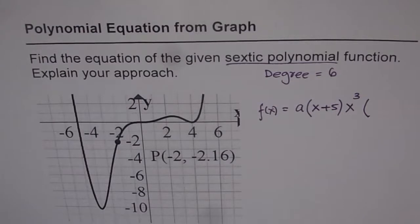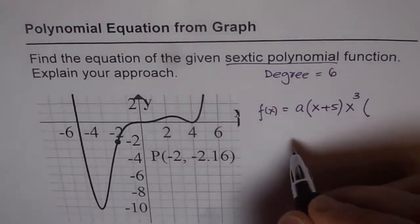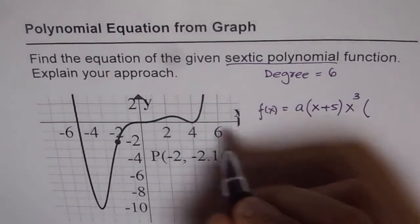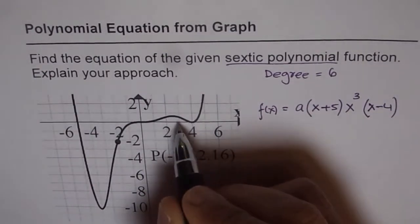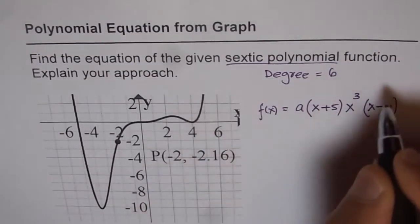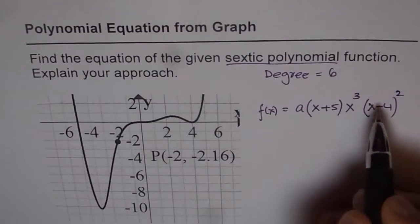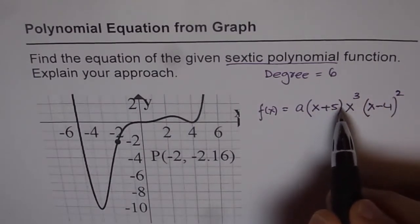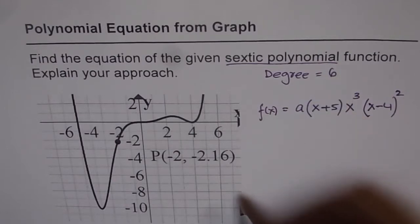Next one is at 4 and so the factor which will give x intercept at 4 is x minus 4 and since it bounces back like a parabola its order should be 2. Do you see that? Now if you count your zeros exponents which is 2 times 3 times 1 you do get 6. So it matches with the given condition.